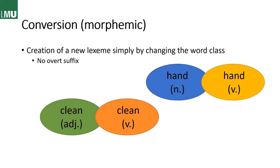Next up, we have conversion, another morphemic pattern, where we create a new lexeme simply by changing the word class. There is no overt suffix — the words sound the same. But we have the adjective 'clean,' which was at some point turned into the verb 'clean.' And then we have the noun 'hand,' which William Shakespeare in fact turned into the verb 'to hand,' as in 'hand me the sword' — a martial example, which I think fits with Shakespeare.